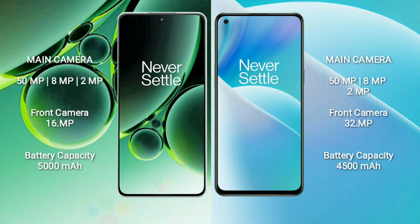OnePlus Nord 3 has a rear triple camera setup: 50MP plus 8MP plus 2MP, with a 16MP front camera. OnePlus Nord 2T also has a rear triple camera setup: 50MP plus 8MP plus 2MP, with a 32MP front camera.